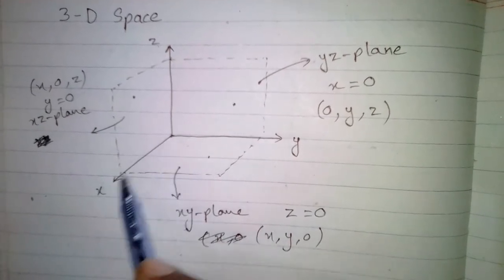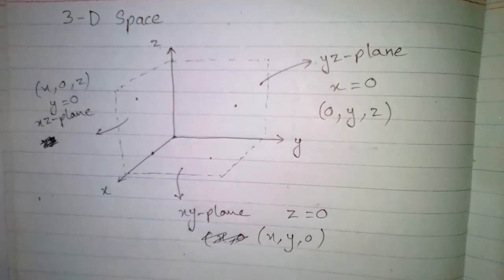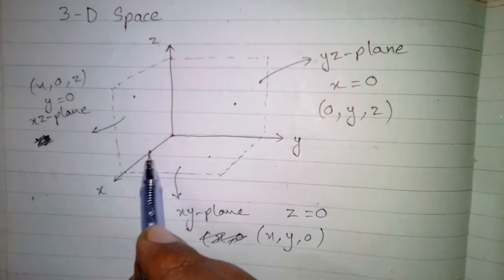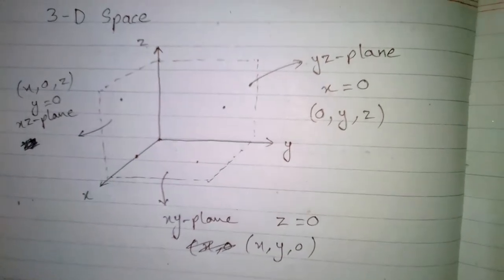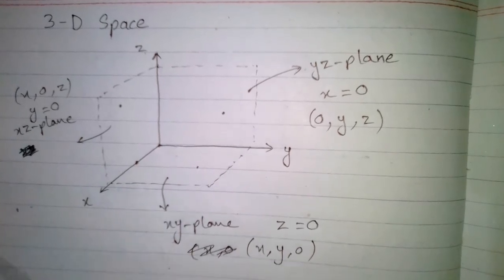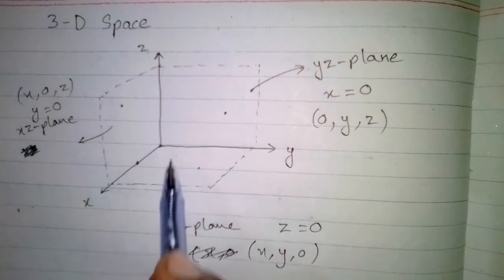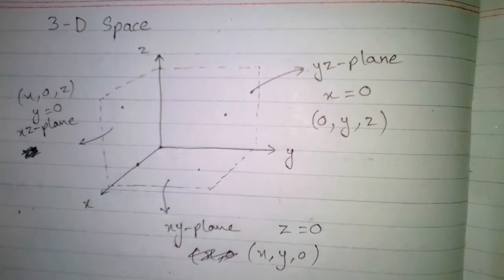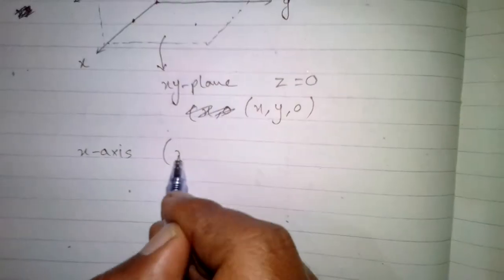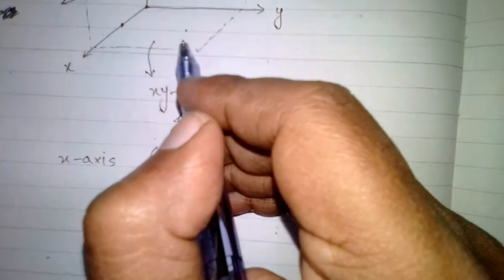Now if we take any point on the X axis, the X component may be zero or nonzero, but the Y and Z components are always equal to zero. So the point on the X axis is of the form (x, 0, 0).